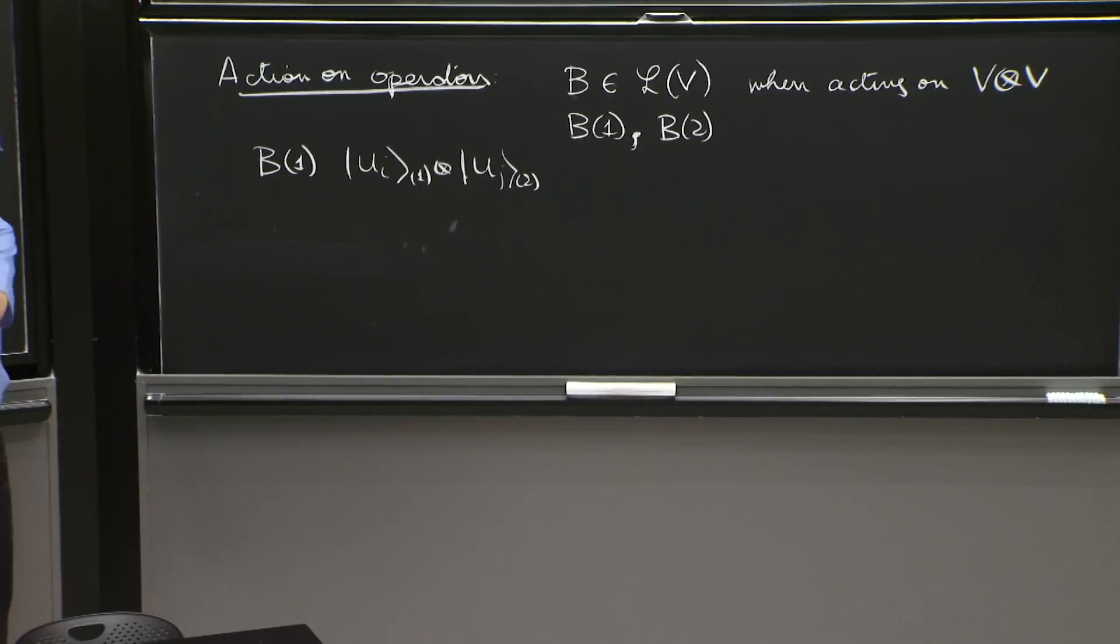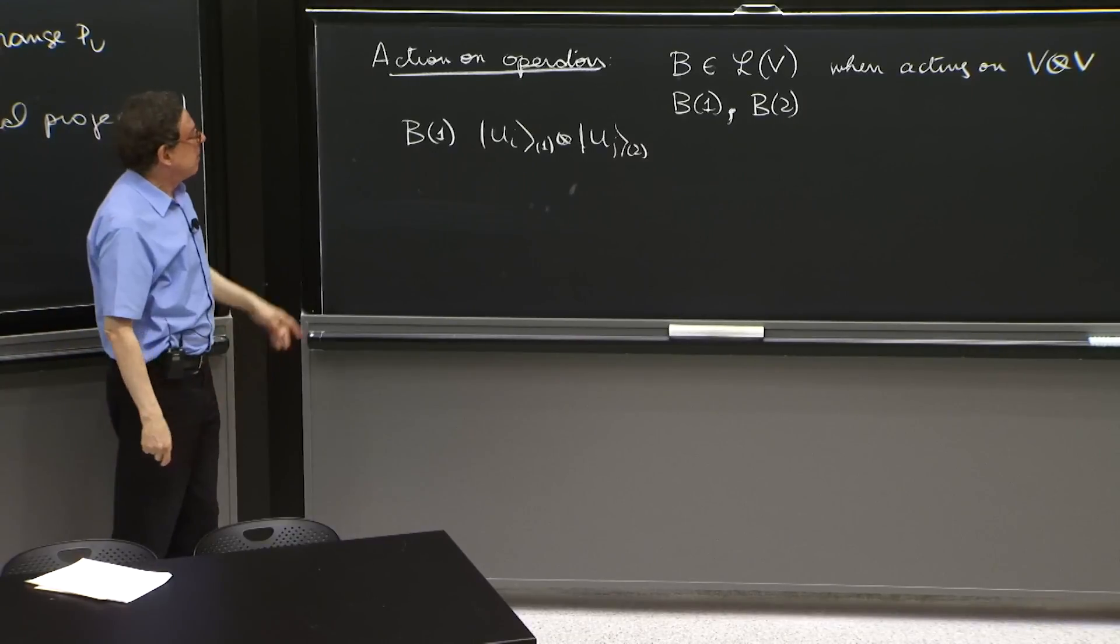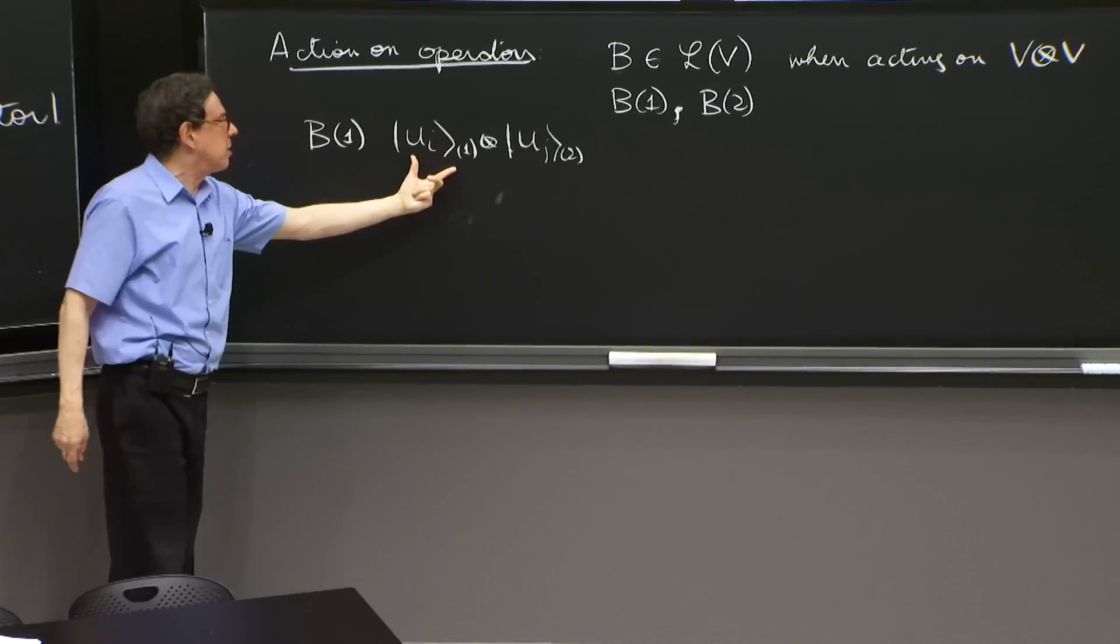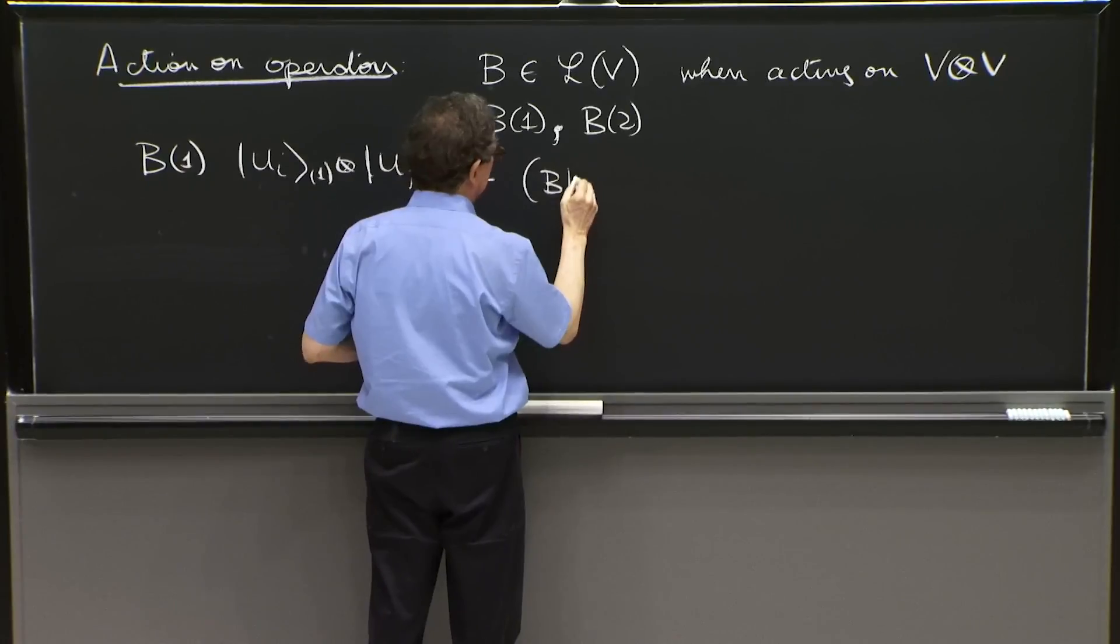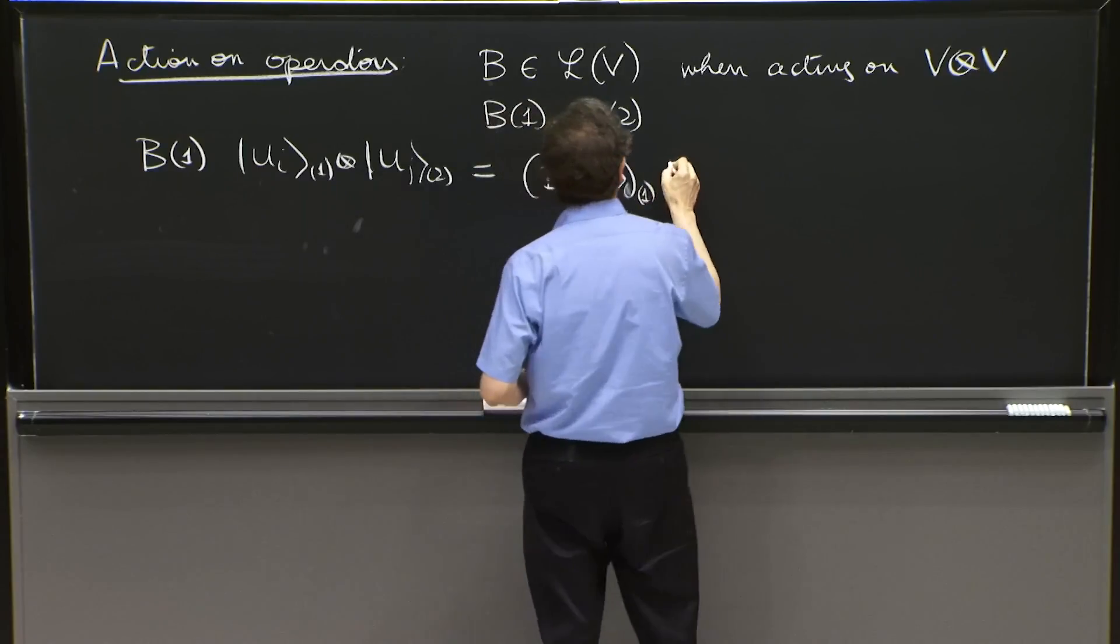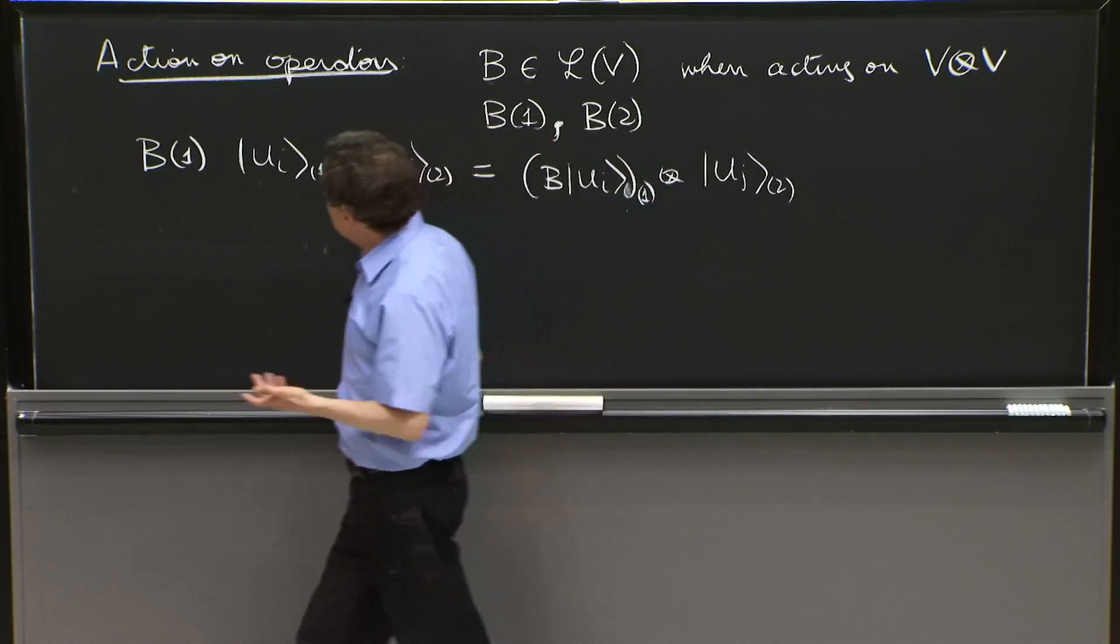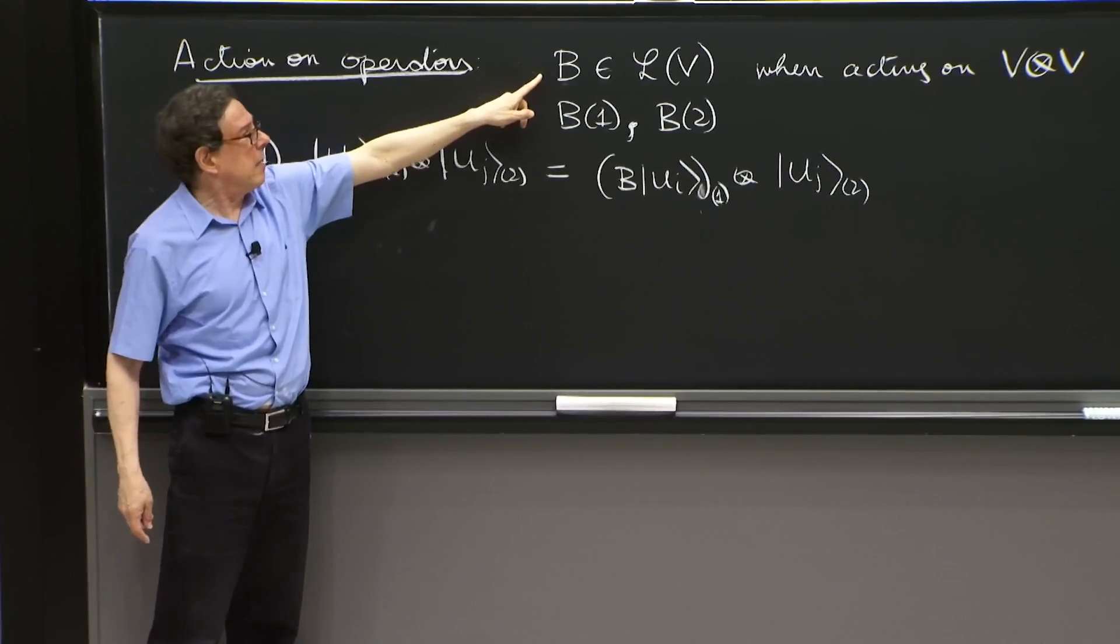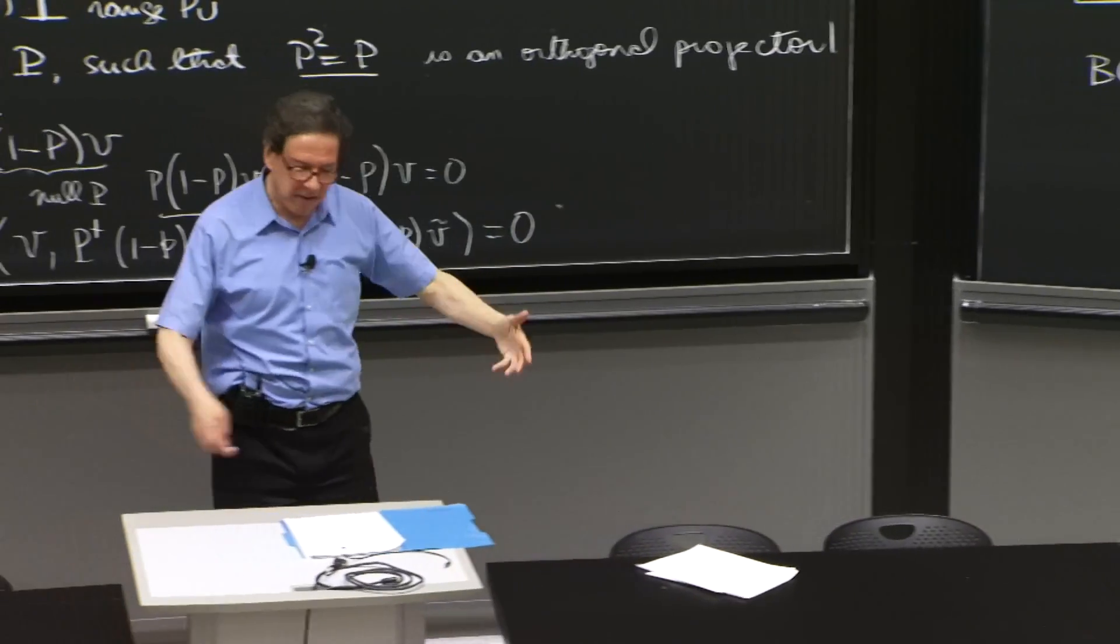B is an operator that knows how to act on every vector on the vector space capital V. So when you say 1, you're meaning that this operator acts on the first Hilbert space. So this is equal to B times Ui1 tensor Uj2. So it just acts on the first state. How does it act? Via B, that is an operator in the vector space V.